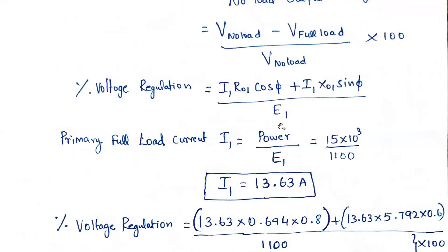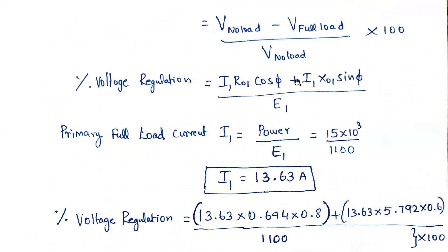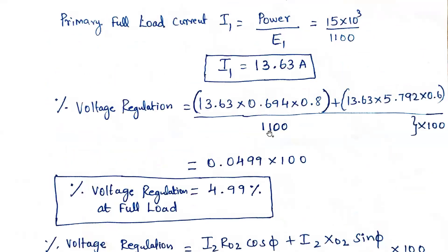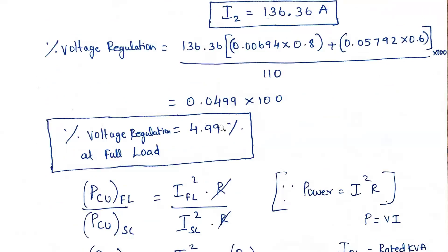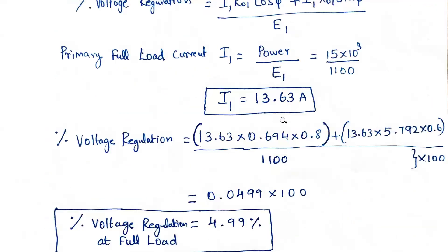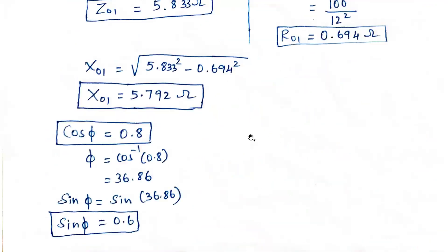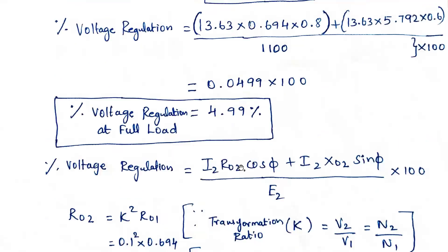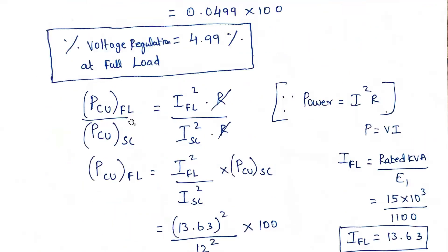So with respect to secondary we also got 4.99%, the same as with respect to primary. This confirms that either approach gives the same result. Since all data were given with respect to primary, calculating from the primary side is sufficient.